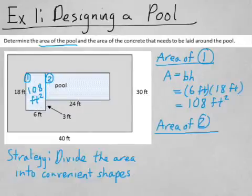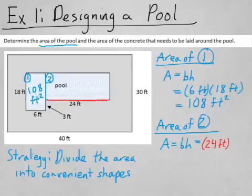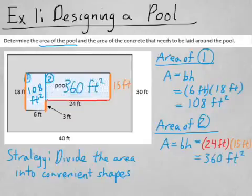Then for the area of rectangle number two, still the same formula. The base is 24 feet. But what about the height? If you notice, that length that's given over there is 18 feet, the width of the entire pool. Then that little piece right there is 3 feet. That means what's left for the height of that rectangle number two is 15. So the height is 15 feet, so that would give me an area for rectangle number two of 360 square feet.